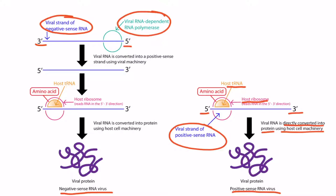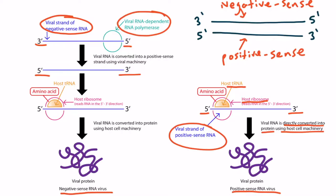Once this conversion occurs, the RNA can be utilized just like a positive sense strand of RNA. So hopefully you were able to deduce that if an RNA virus is double-stranded, then one of the strands must be negative sense and the other complementary strand must be positive sense. Therefore, double-stranded RNA viruses aren't really considered positive sense or negative sense.